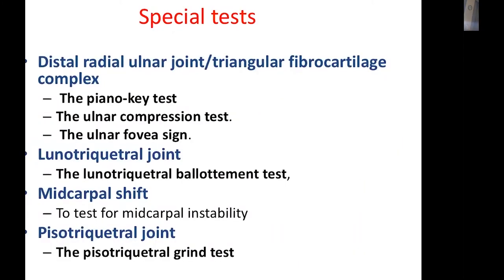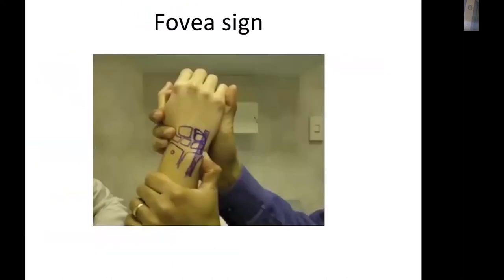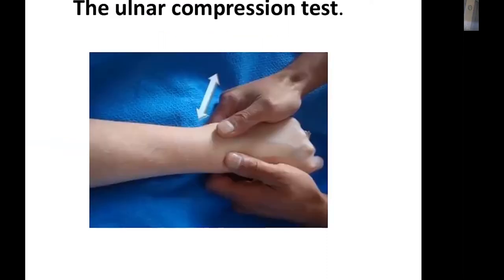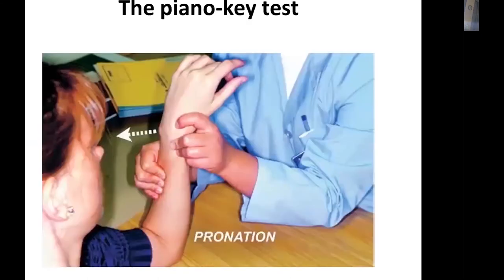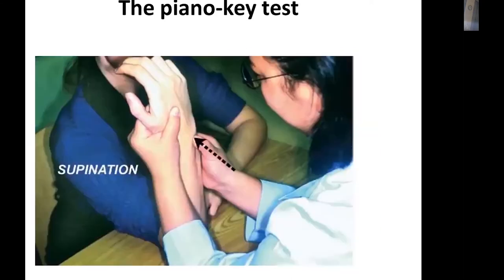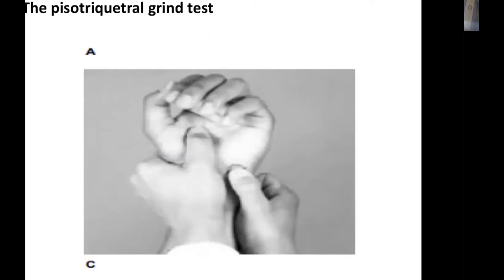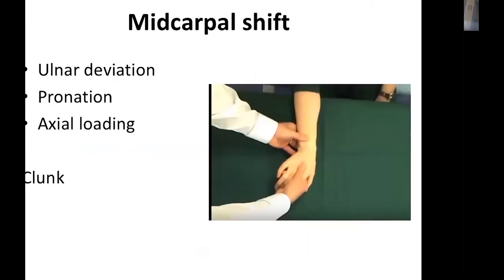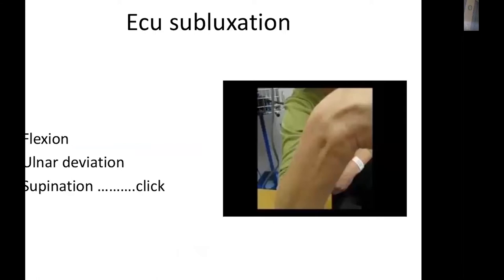According to the suspected pathology, we use special maneuvers to confirm diagnosis. For TFCC: the fovea test, and the ulnar compression test using axial load causing clicks and pain. The piano key test and ballottement assess instability between radius and ulna — always compare to the contralateral side. Instability indicates a deep TFCC tear. Additional tests include the lunotriquetral ballottement, pisotriquetral grind test, midcarpal shift test with ulnar deviation and pronation causing a clunk, and ECU subluxation provoked by flexion, ulnar deviation, and supination causing an audible clunk.